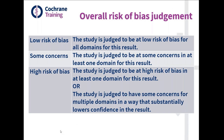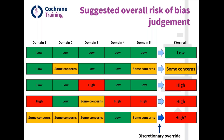These are the proposed rules for reaching the overall risk of bias judgment. As a general rule, the highest risk of bias judgment across domains determines the overall risk of bias. To get a low overall risk of bias judgment, we need to have low risk of bias in all five domains.